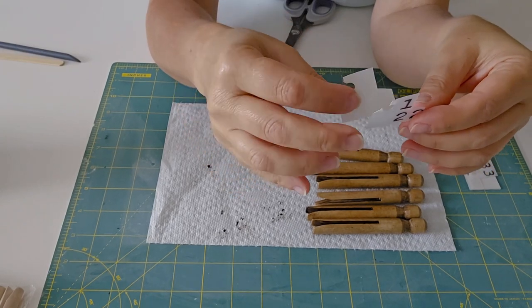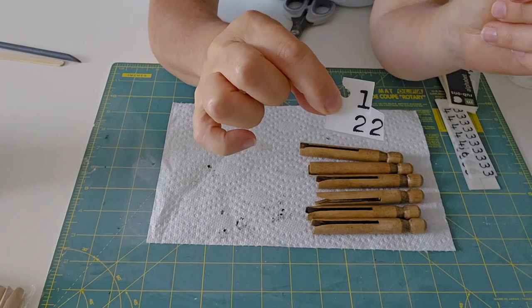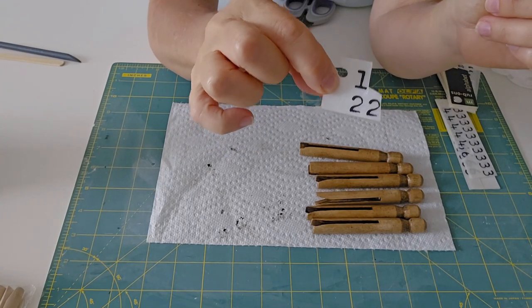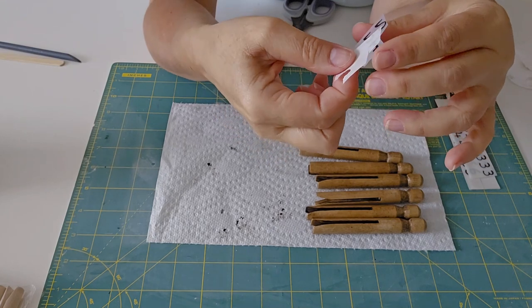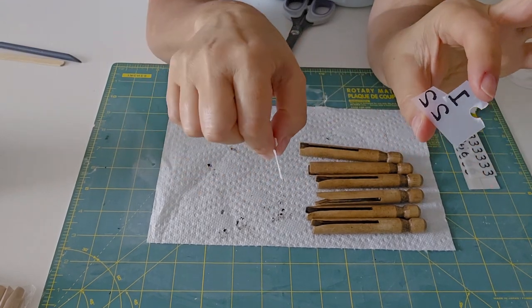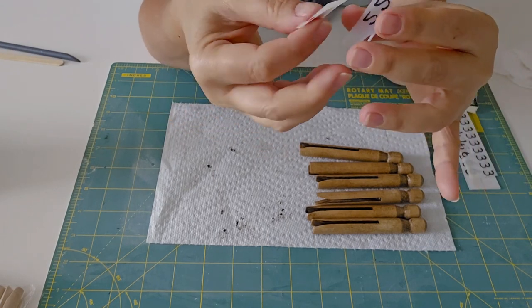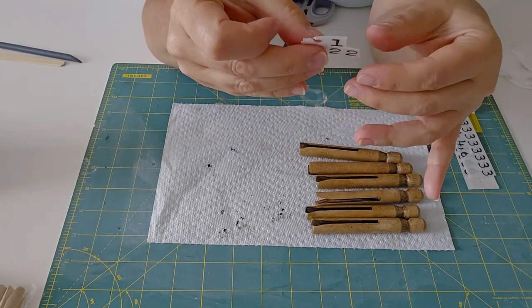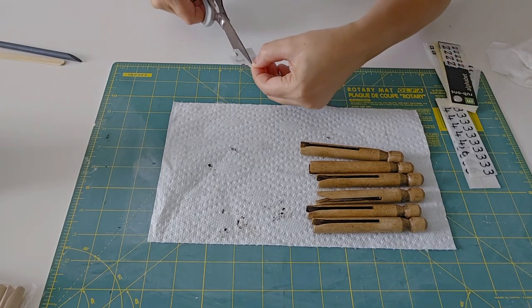You will note, rub-ons come with a waxy sort of backing and you want to keep that on them until you rub. Because if you don't, the top part, the back of it, is the actual ink or whatever it is. If you scratch that with your finger you can actually remove it and obviously we don't want to do that.